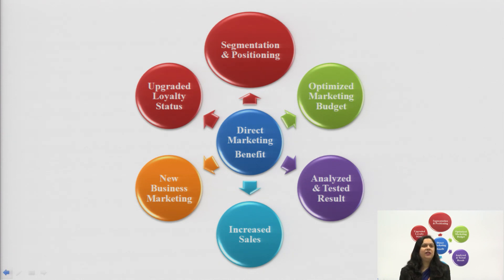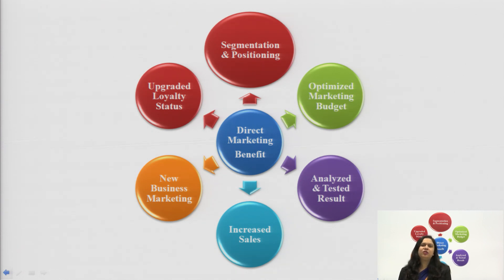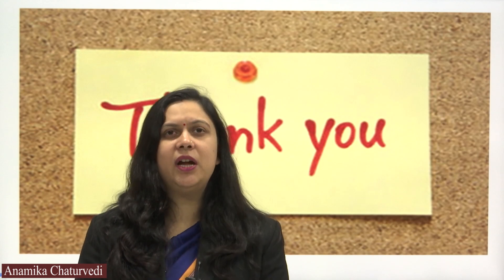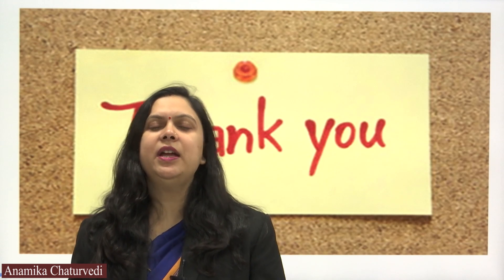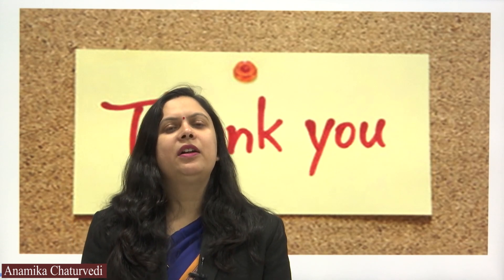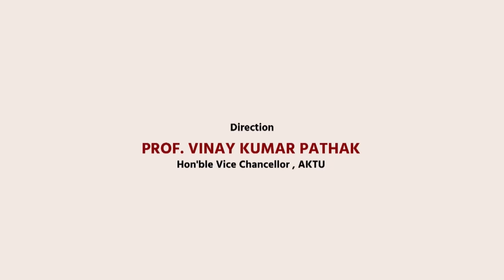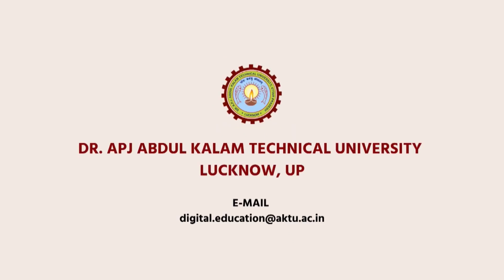Next is optimizing the marketing budget and analyzing tested results. Both are benefits because they can optimize what will be the budget of direct selling, and by talking to the consumer, they can know about the feedback. Direct marketing is basically about directly connecting with the consumer, informing them about the product, and selling them products directly after removing the intermediaries in the market. That is all about direct marketing. Hope you understand the topic. Thank you very much.